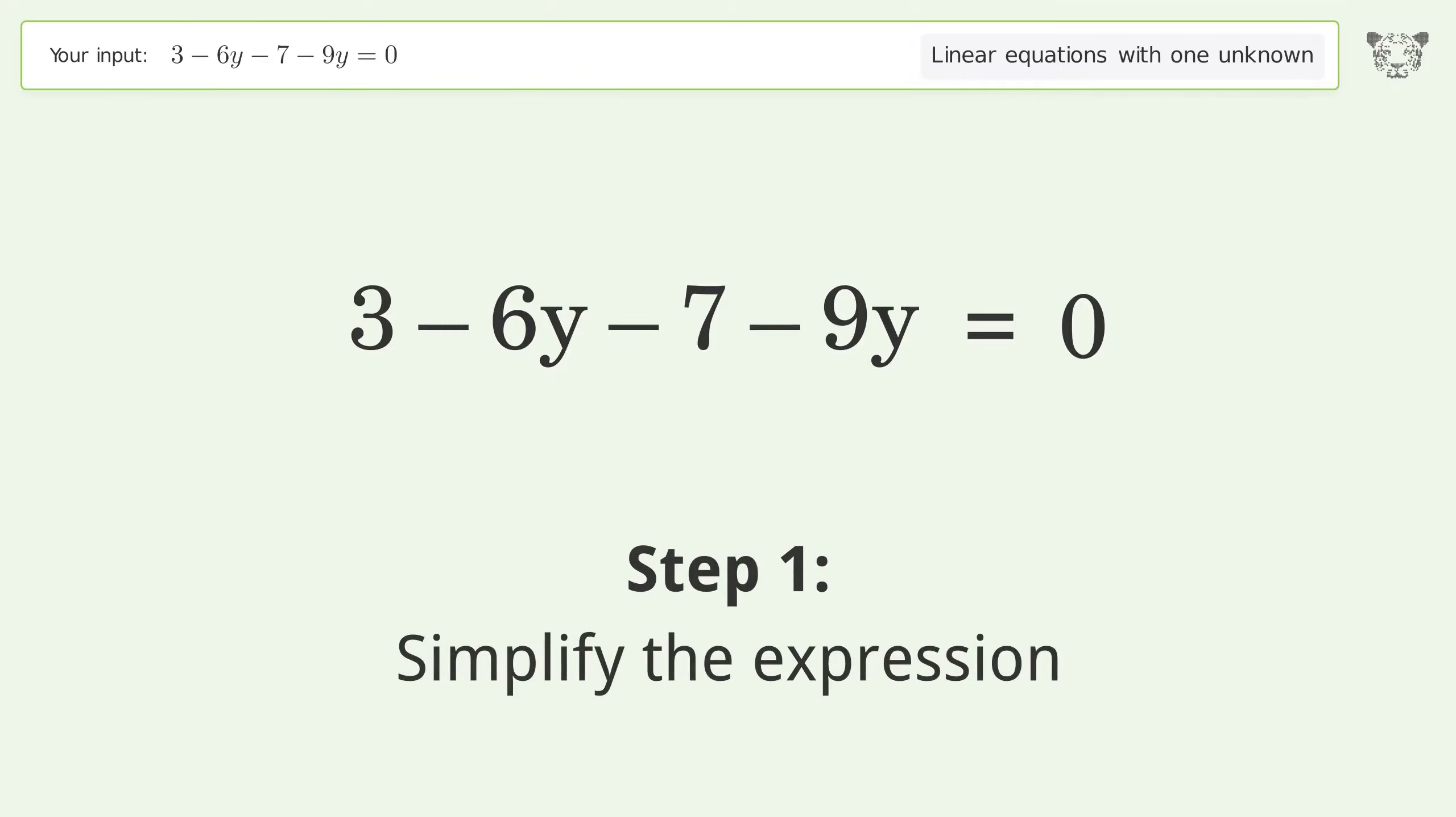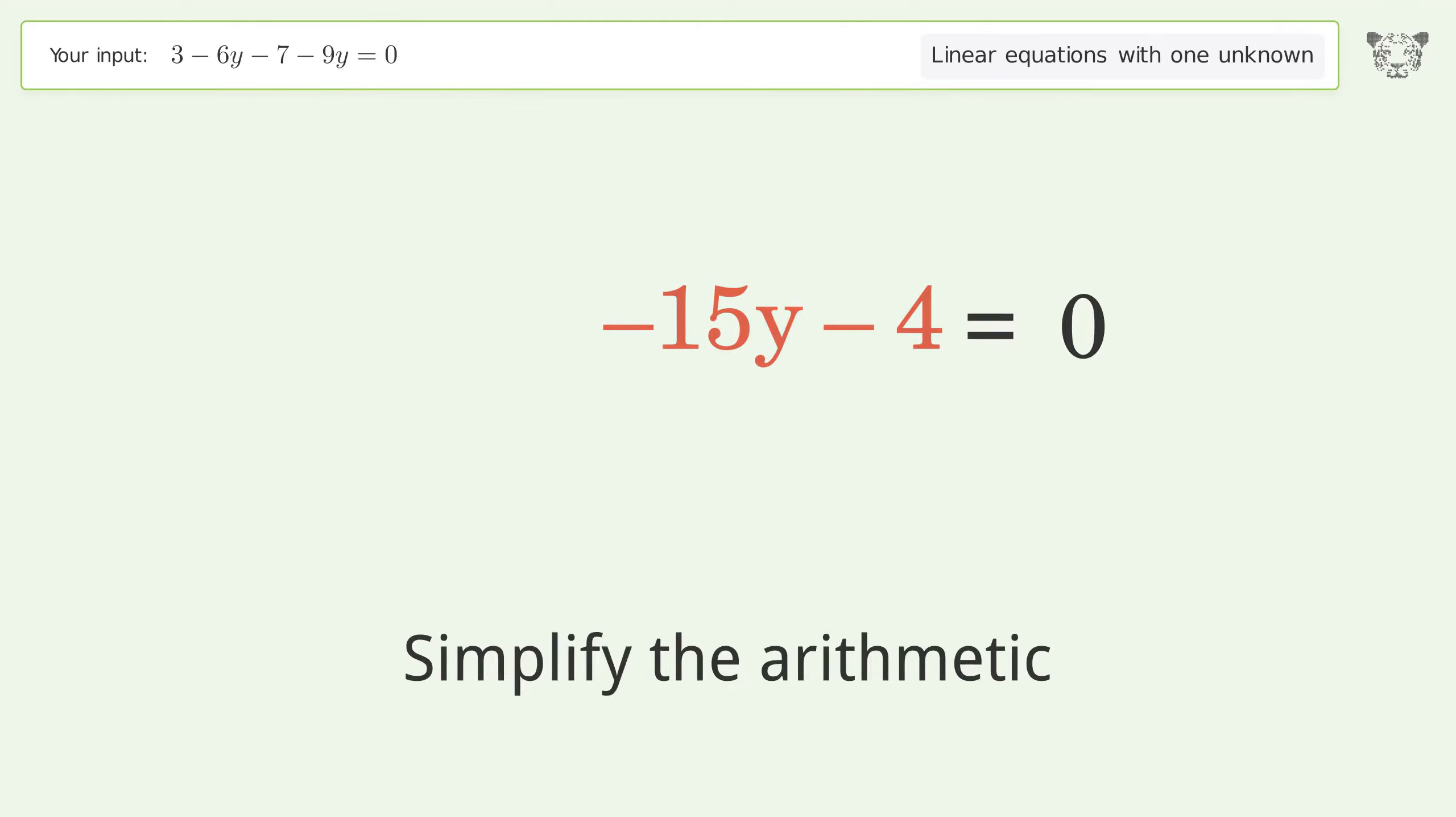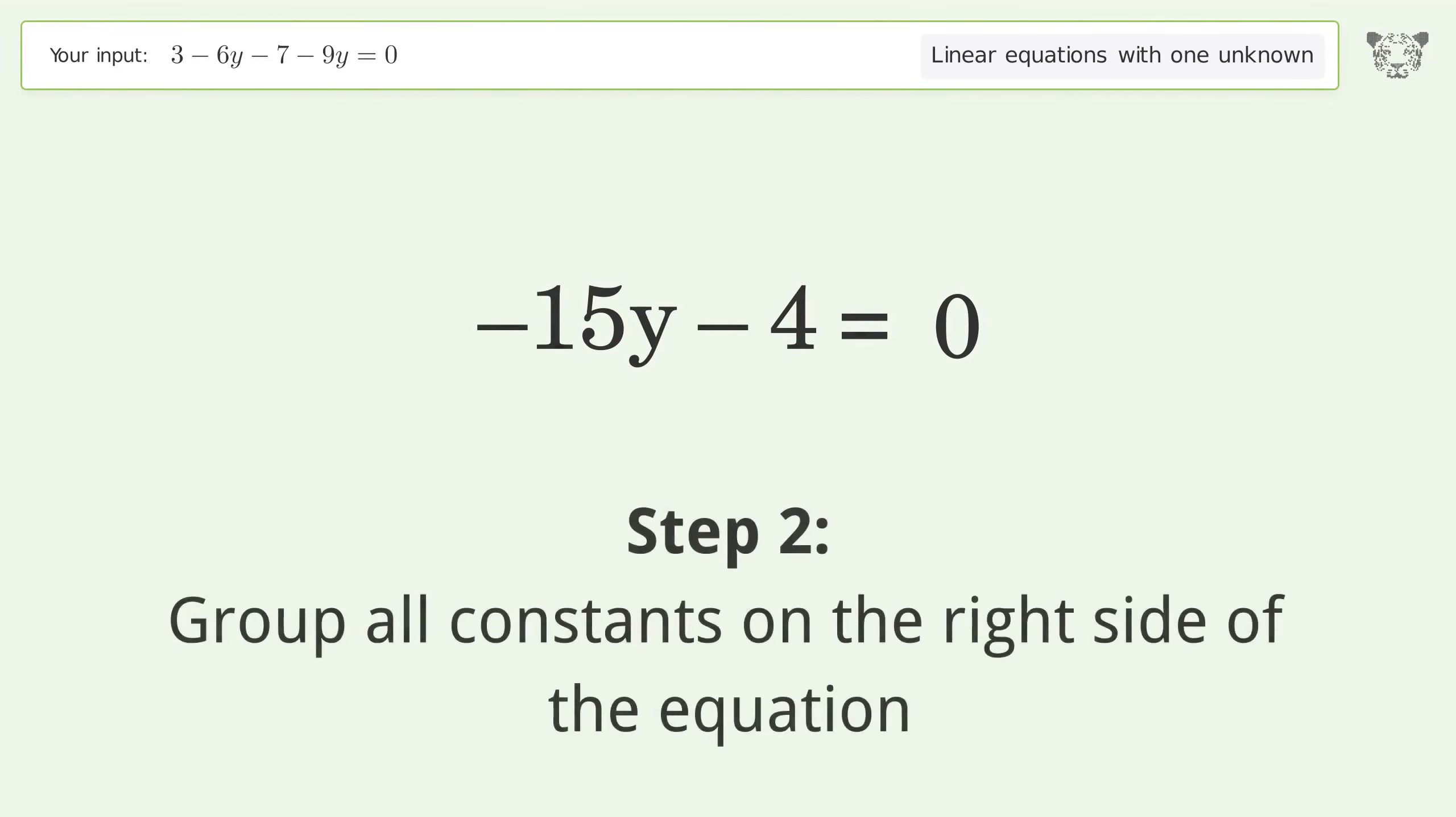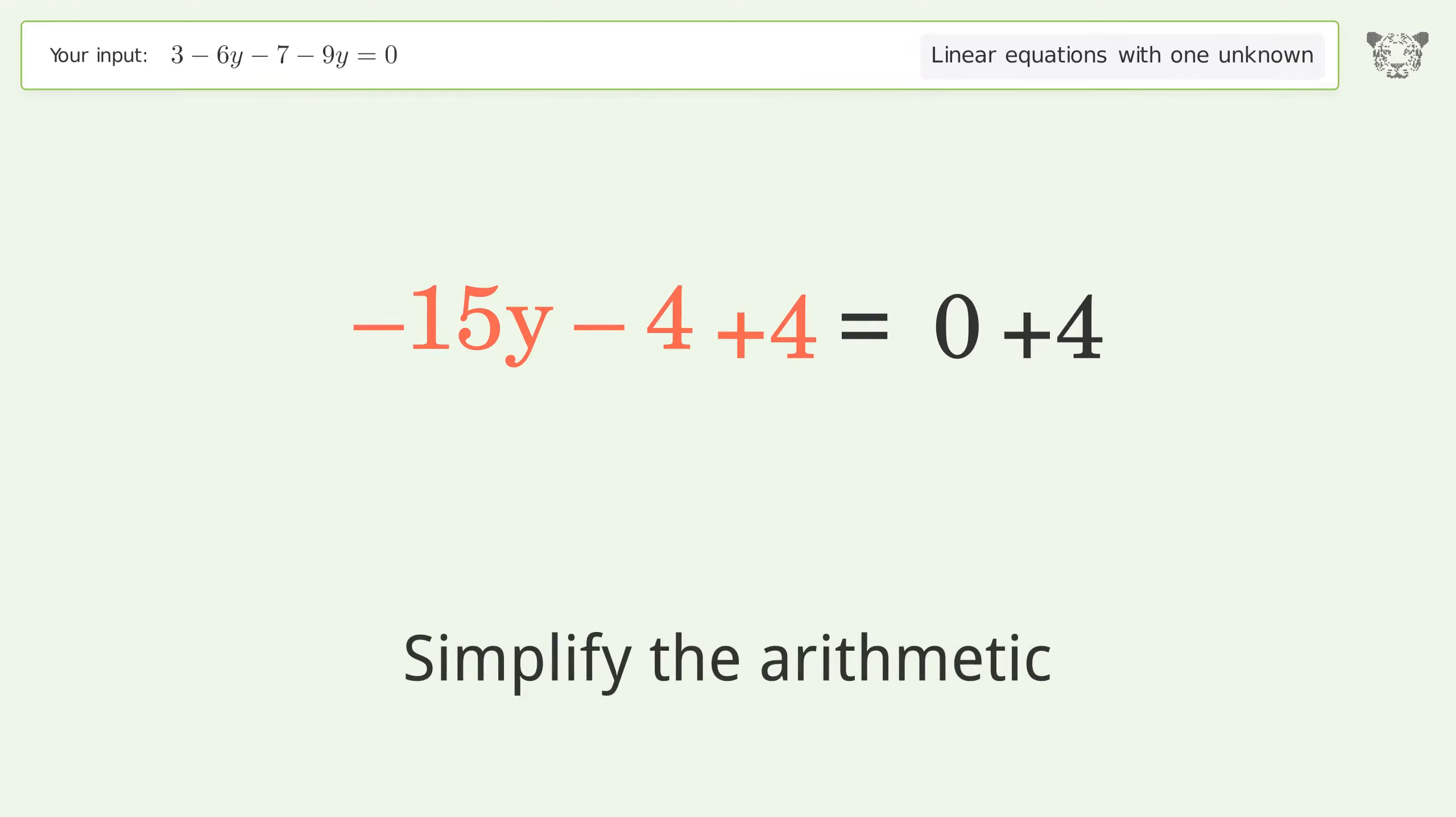First, simplify the expression by grouping like terms, then simplify the arithmetic. Next, group all constants on the right side of the equation by adding 4 to both sides, and simplify the arithmetic.